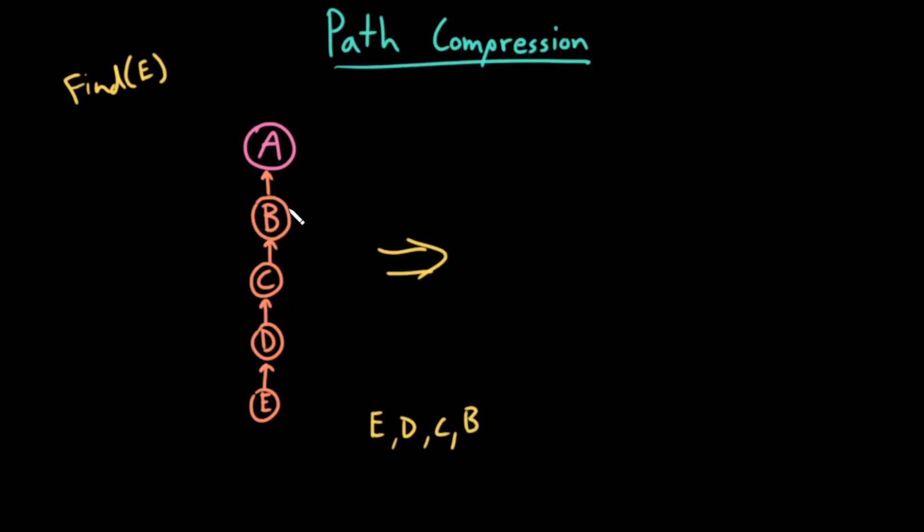Now I'm at B. B is also not a sentinel because it has a parent. So I traverse. And now I'm at A. So I've reached my sentinel node. These were all the nodes that I visited along the path.